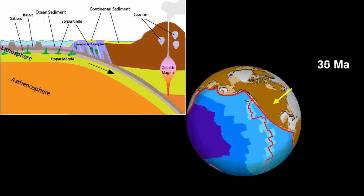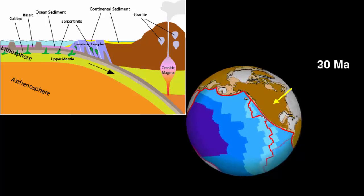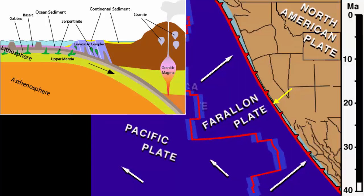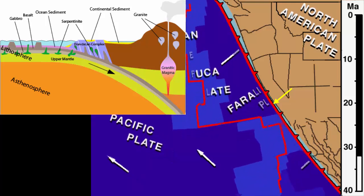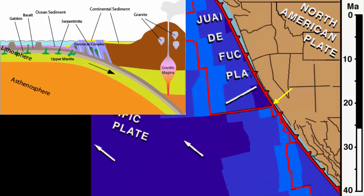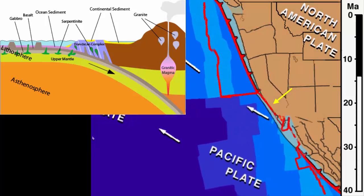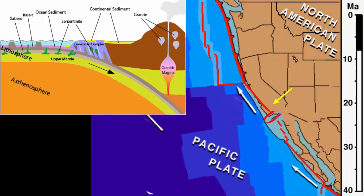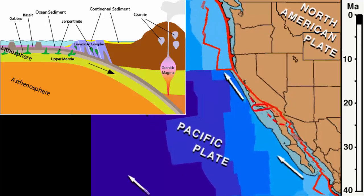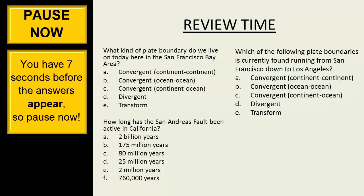But about 25 million years ago, the spreading center began to be overrun. It subducted under the North American continent, and the San Andreas Fault System began to form.